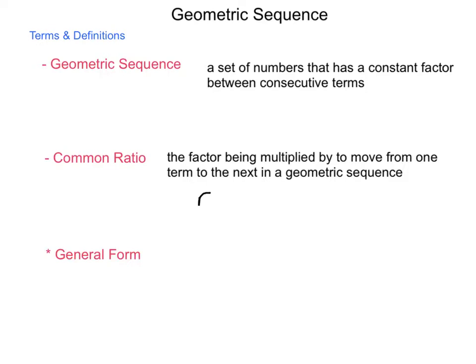As we go through and start looking at the general form for our geometric sequences, it's a sub n equals a sub 1 times r to the n minus 1 power.